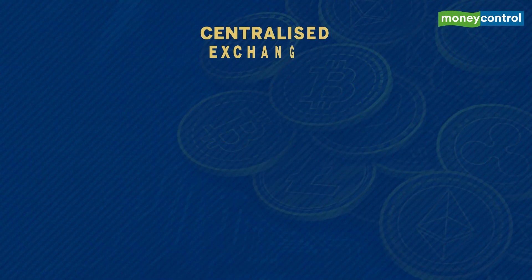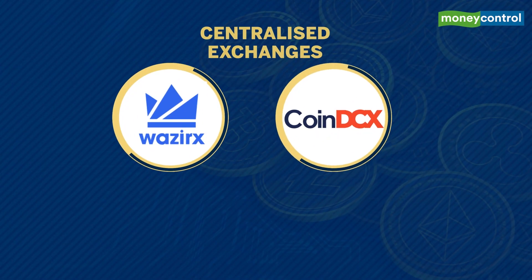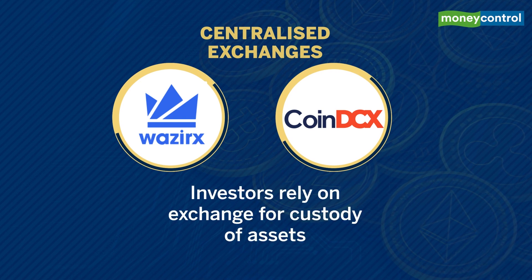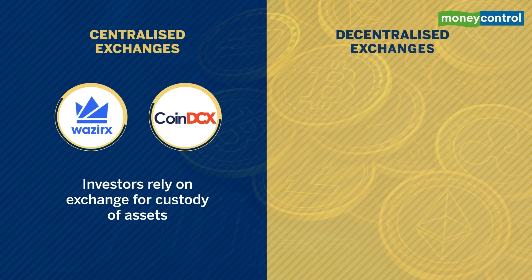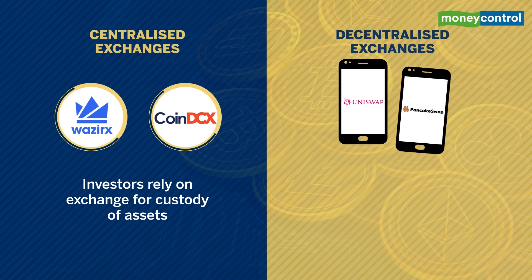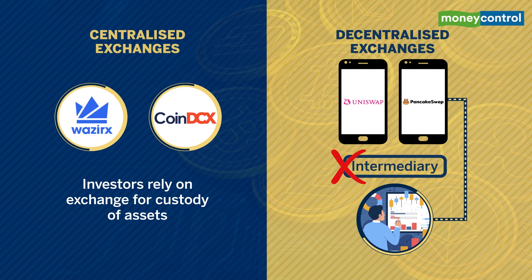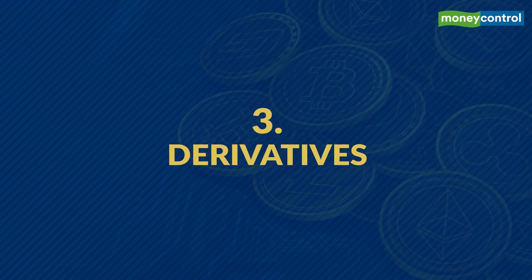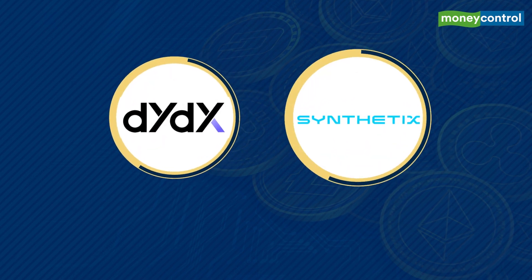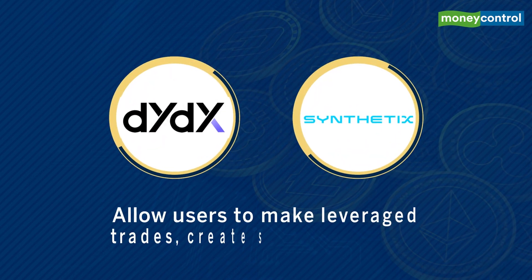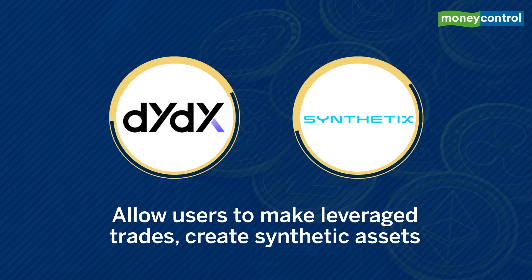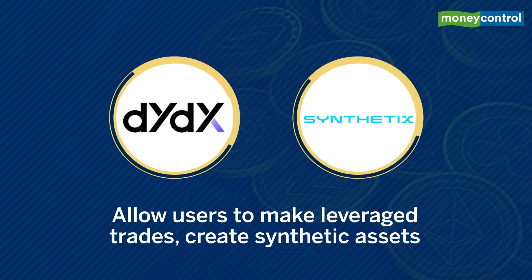Next up is trading. With centralized exchanges like WazirX and CoinDCX, you are relying on the exchange to take custody of your assets with each trade. Decentralized exchanges like Uniswap and PancakeSwap remove the intermediary and allow people to trade directly with each other. And finally, there are derivatives. Platforms like DYDX and Synthetix allow users to make leveraged trades or even create synthetic assets that mimic traditional stocks and commodities.